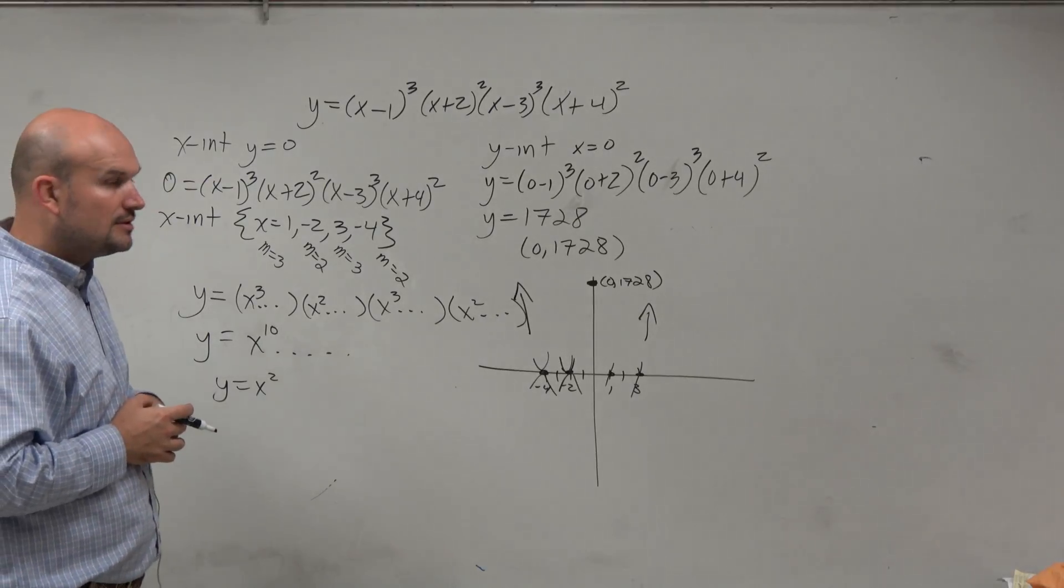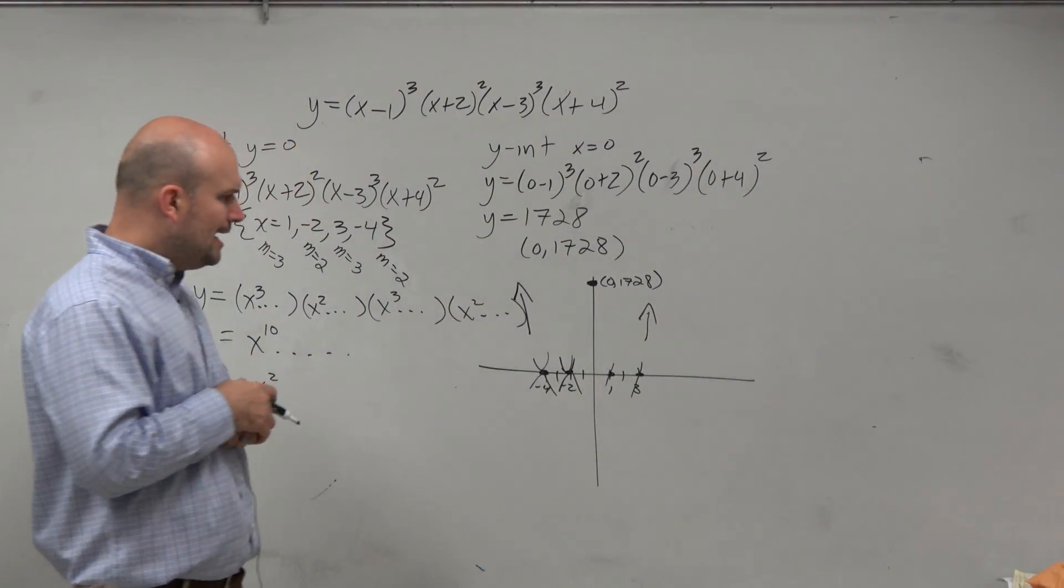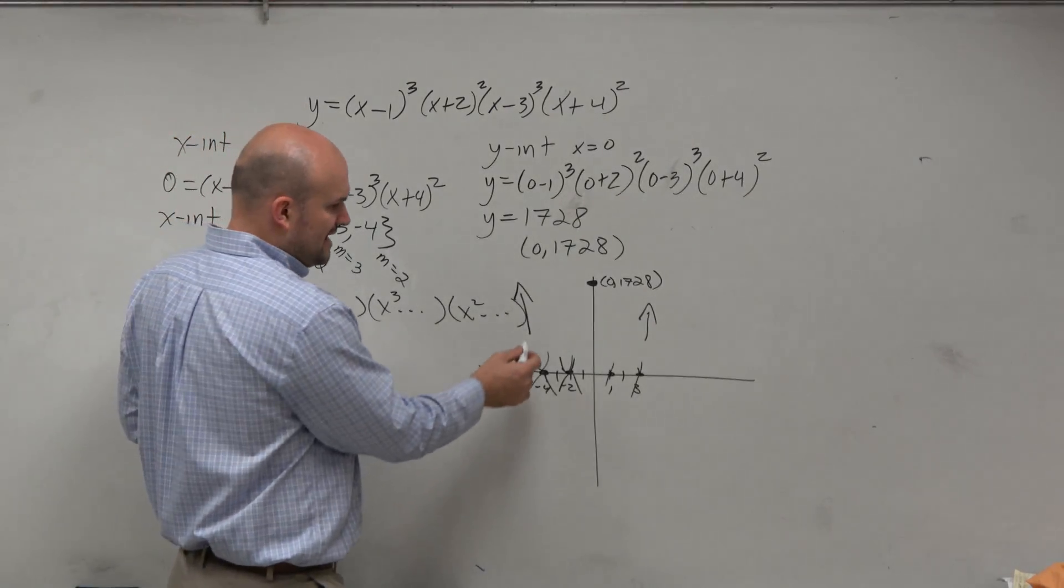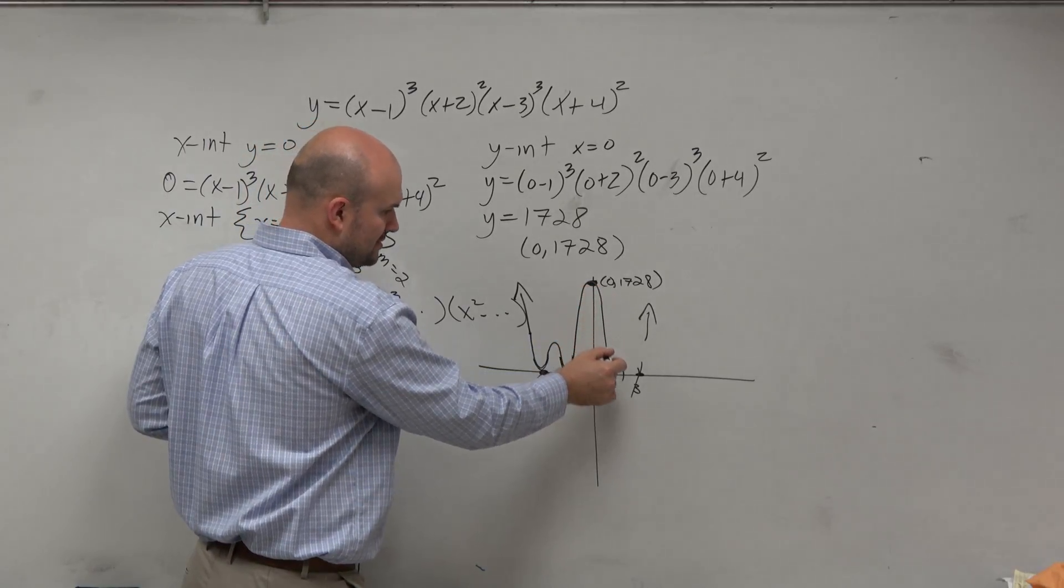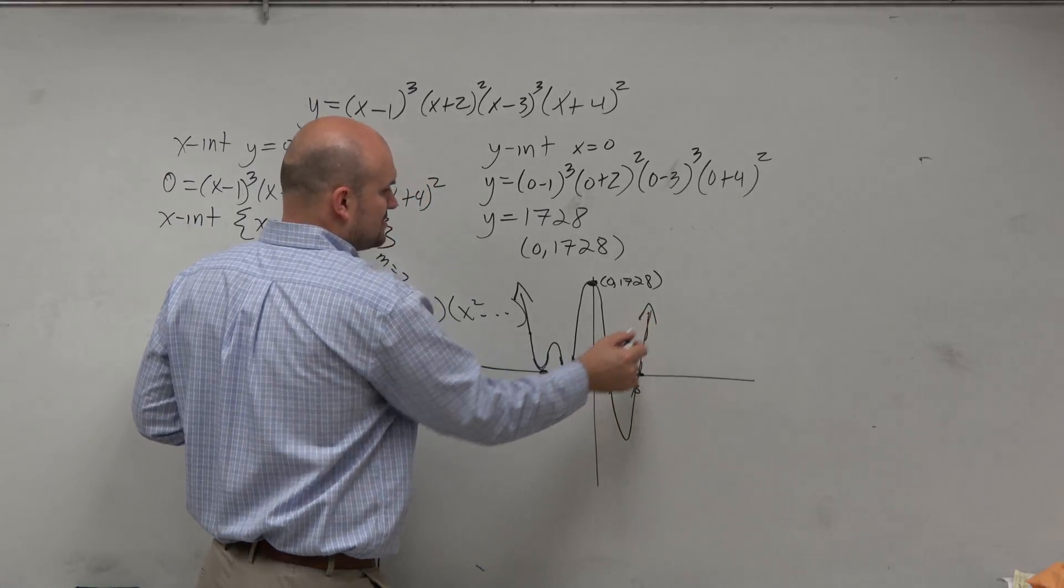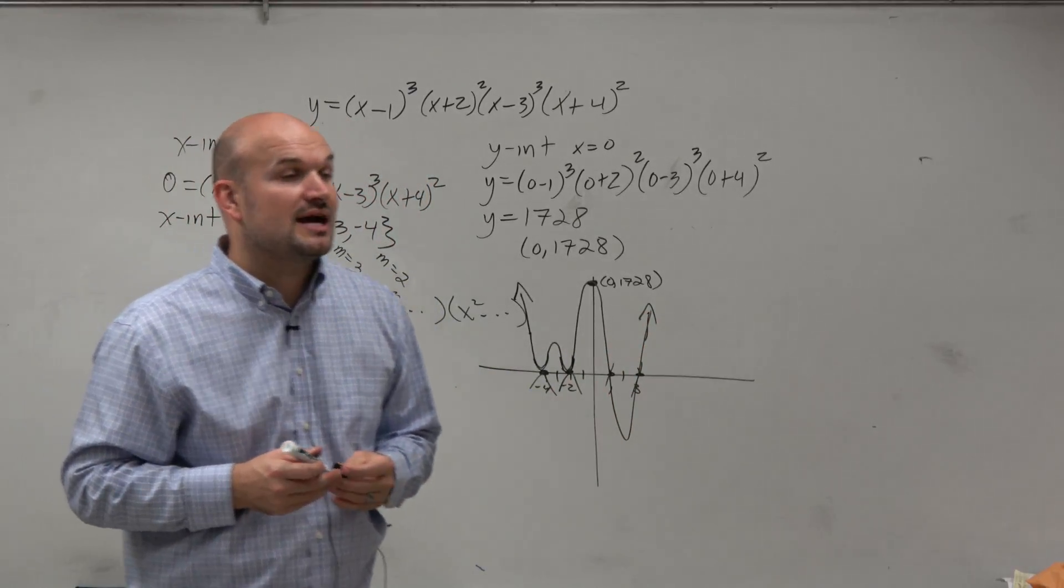Now, we can just connect. And you guys can see this bounces, bounces, goes through my y-intercept, crosses, and then crosses. So the graph looks something like that.